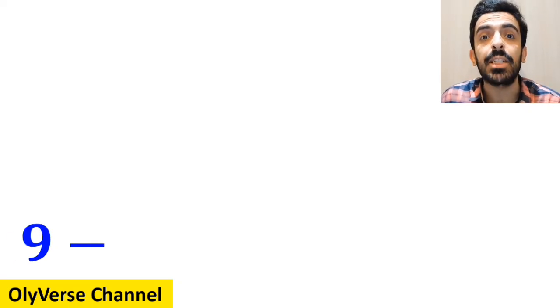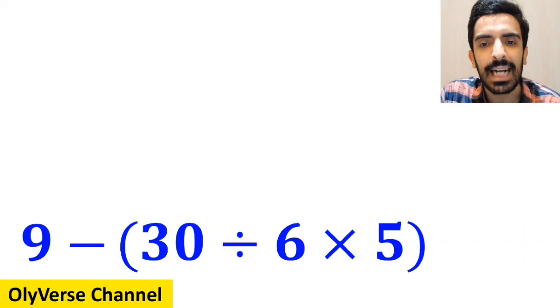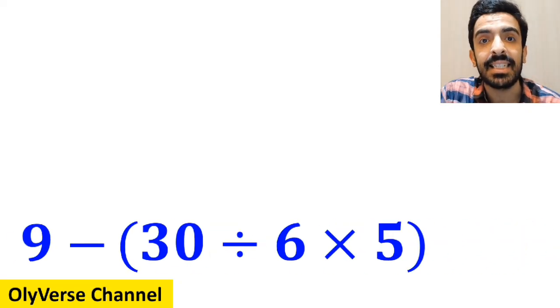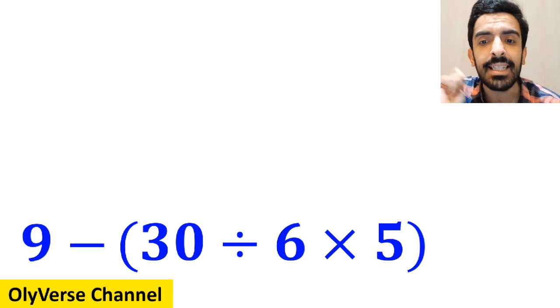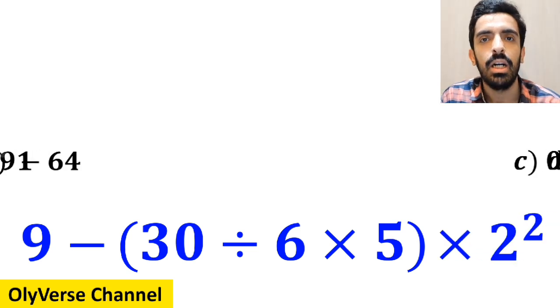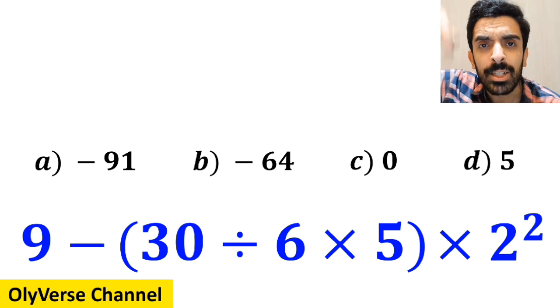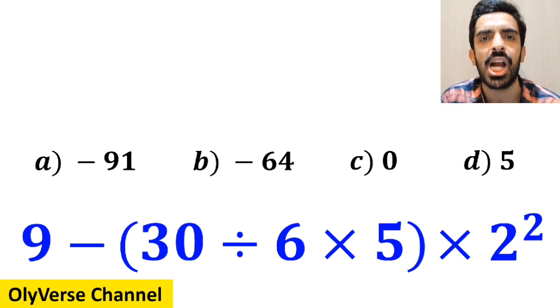What is the value of the expression 9 minus open parenthesis, 30 divided by 6 times 5, close parenthesis, and multiply it by 2 squared? Which option do you think is the correct answer to this question?